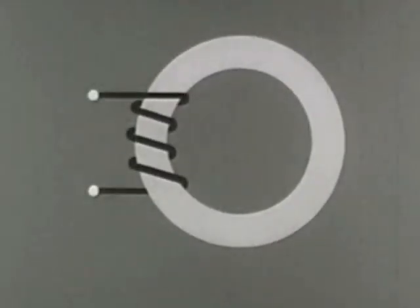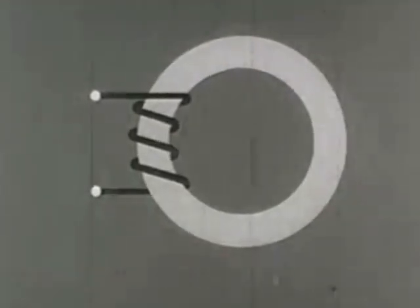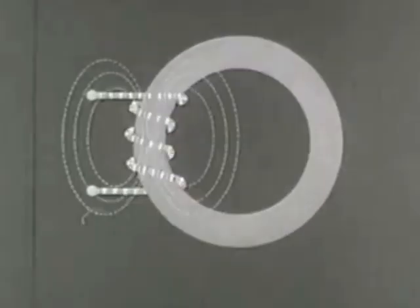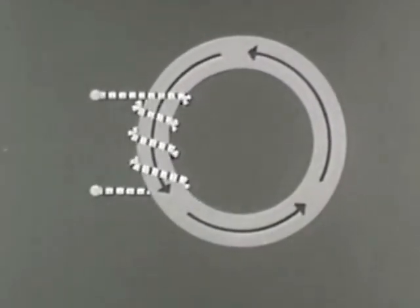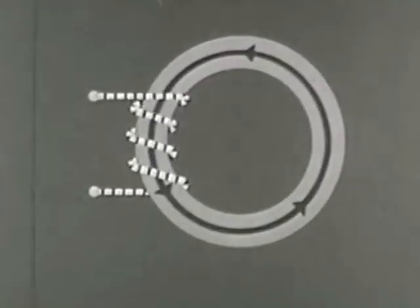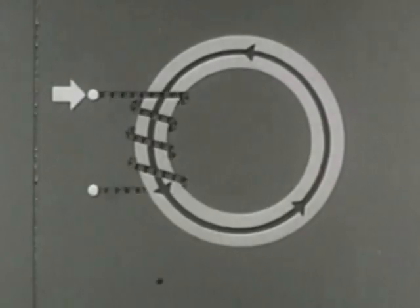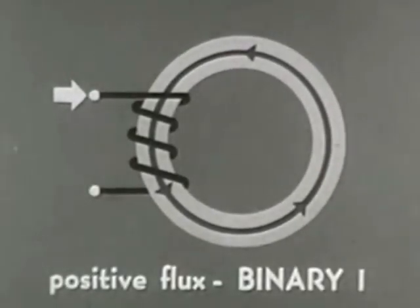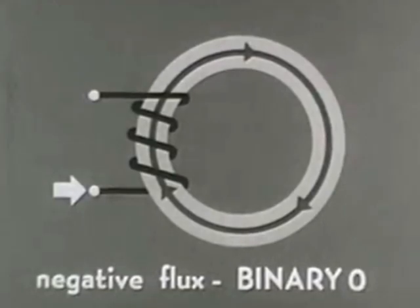Around the core is wrapped a conductor. Current flowing through the winding produces a magnetic field around the conductor. Because the core is made of highly permeable material, it forms a path for the magnetic lines of force. Because it is ring-shaped, the path it forms is a closed loop. Current flowing in one direction produces a positive flux, setting the core in the binary one state. Current flowing in the opposite direction produces a negative flux, setting the core in the binary zero state.